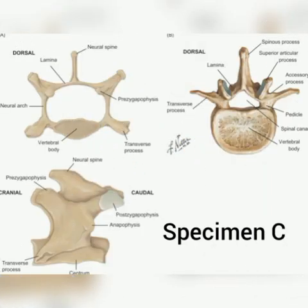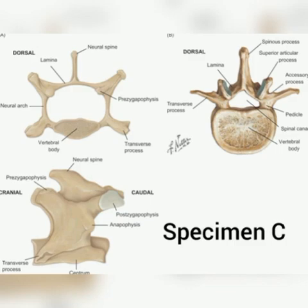Specimen C is the lumbar vertebra, located in the upper abdominal region. There are five in number in man. Characteristics include a large flattened transverse process, a broad and flat neural spine, and a large and thick centrum. It also has two extra paired projections called anapophysis and metapophysis, which are for the attachment of abdominal muscles. Its functions are: it provides attachment for abdominal muscles and it bears the considerable weight of the body.